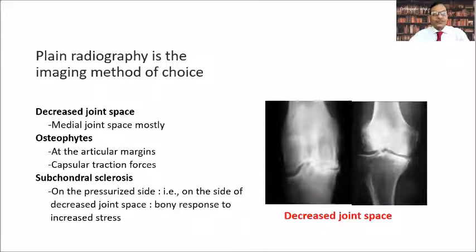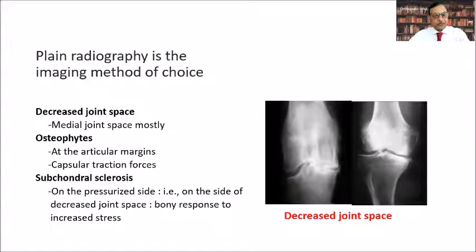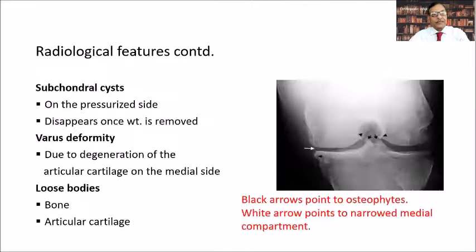Plain X-ray is the imaging method of choice. Findings include decreased joint space — mostly on the medial side — osteophytes at the articular margins, subchondral sclerosis usually on the pressurized side, subchondral cysts, varus deformity, and sometimes loose bodies.